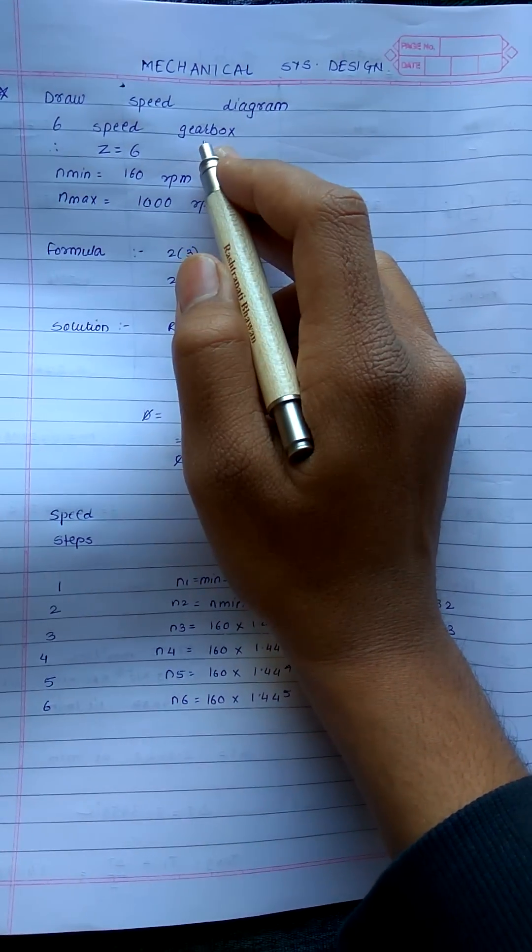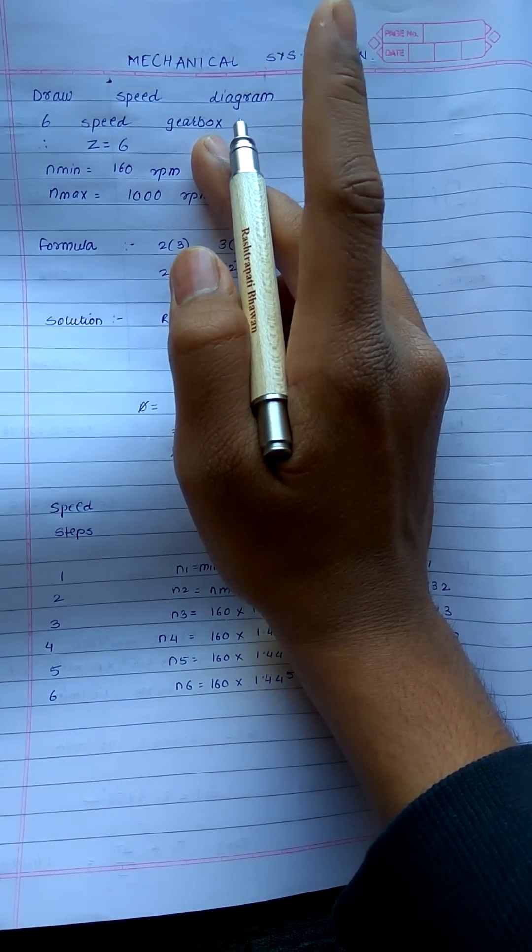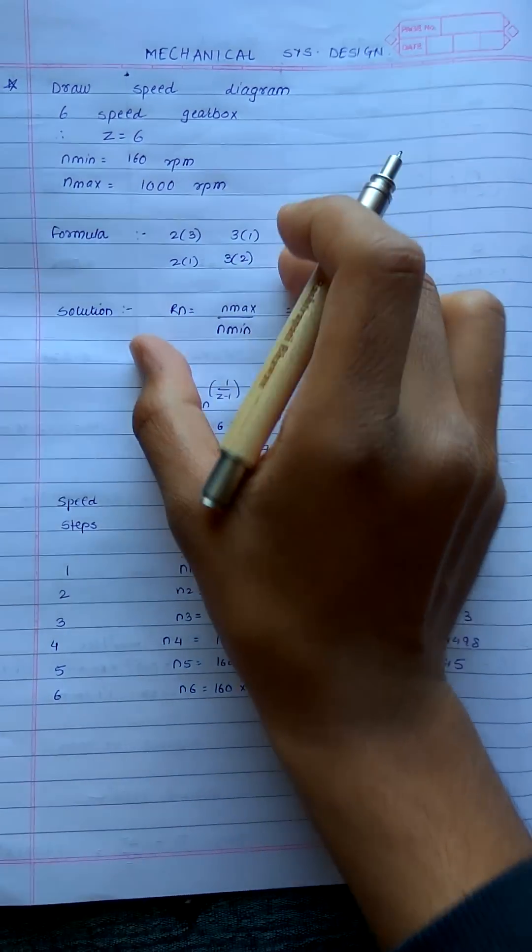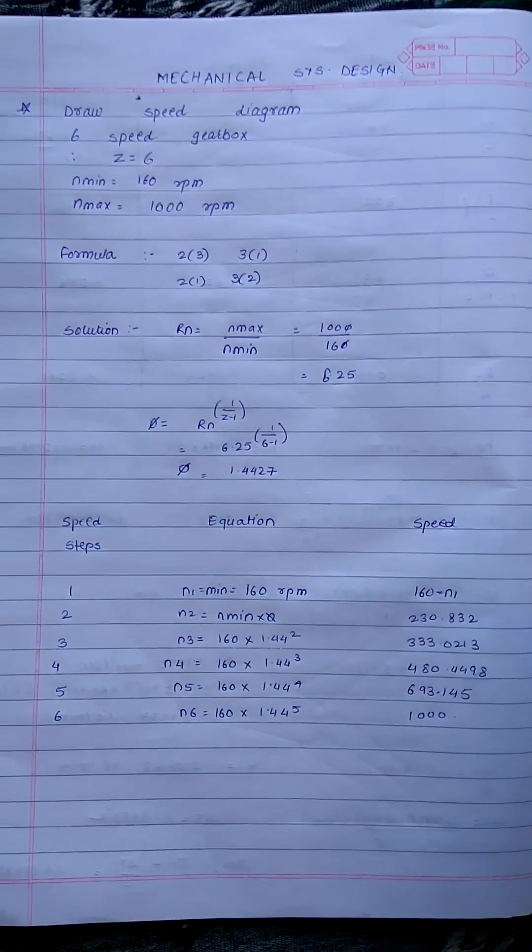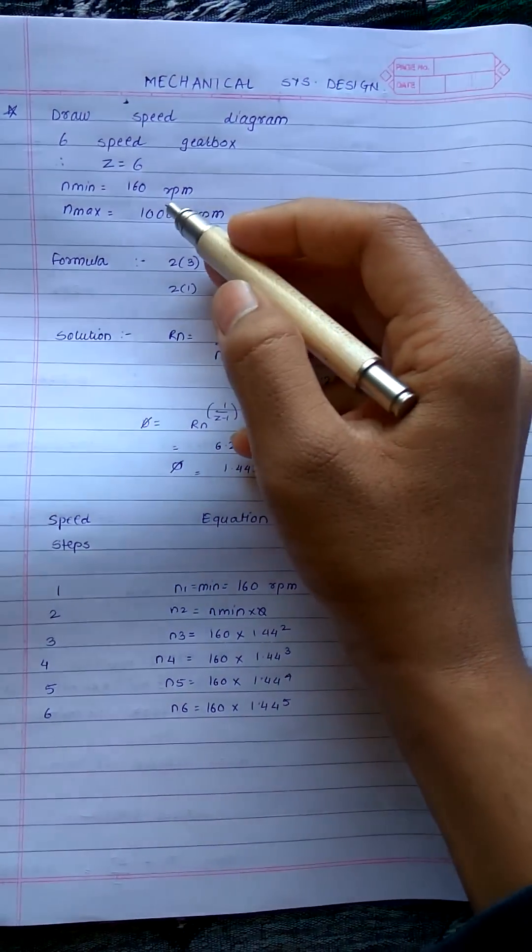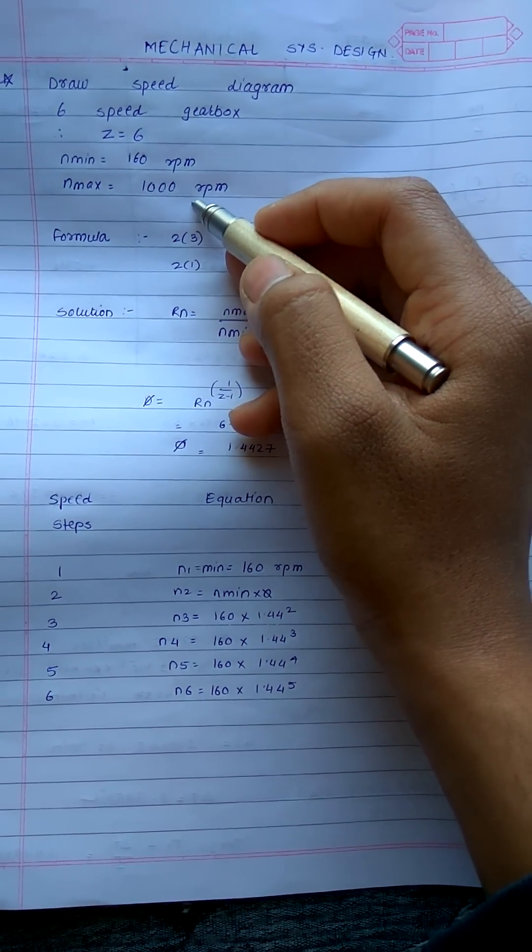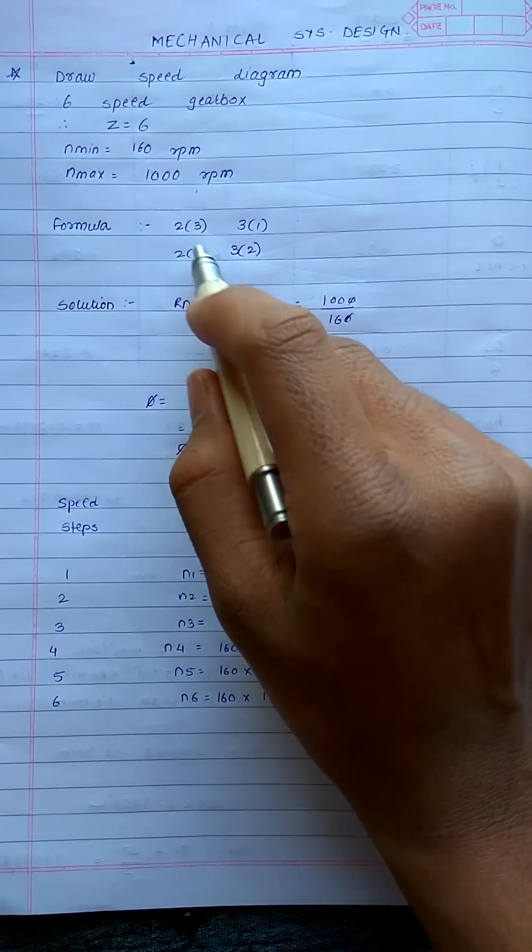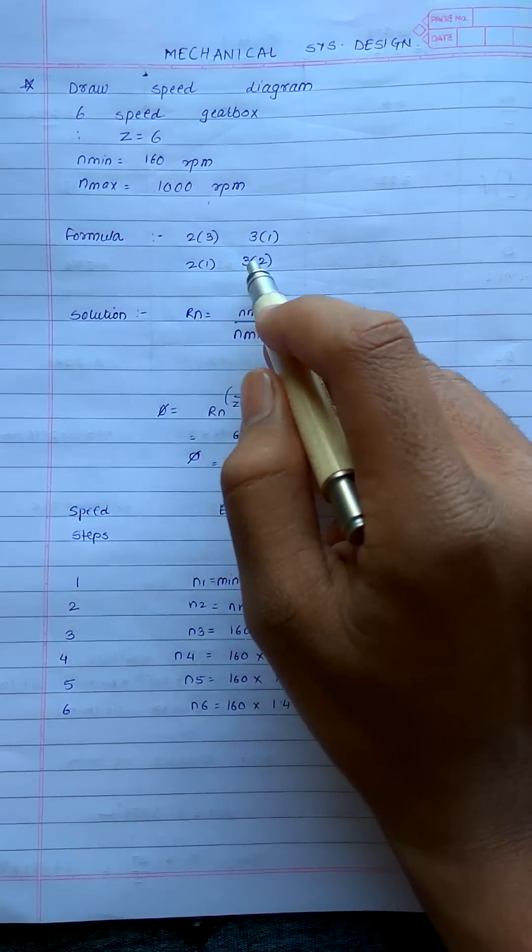We have been given a 6-speed gearbox. 6 speeds will be n1, n2, n3 - these are the speed steps in the gearbox at various gear levels. Minimum speed and maximum speed is given, and the formula is given: 2-3, 3-1, 2-1, 3-2.